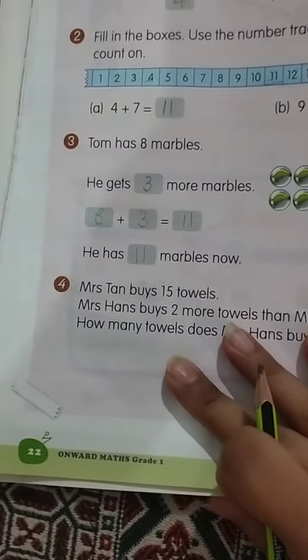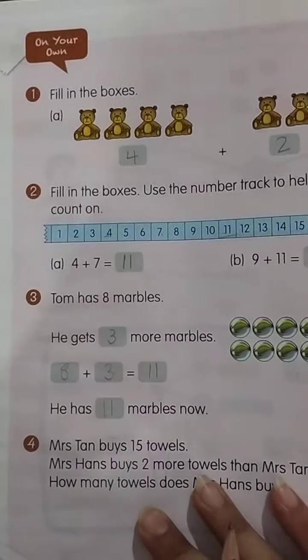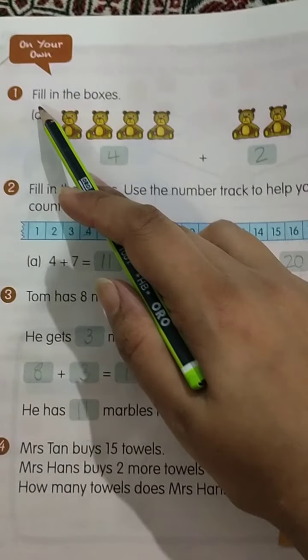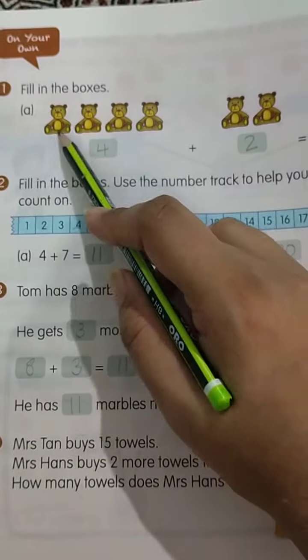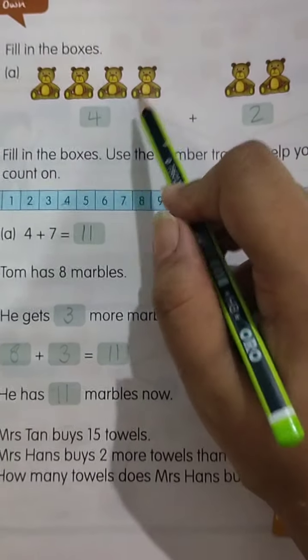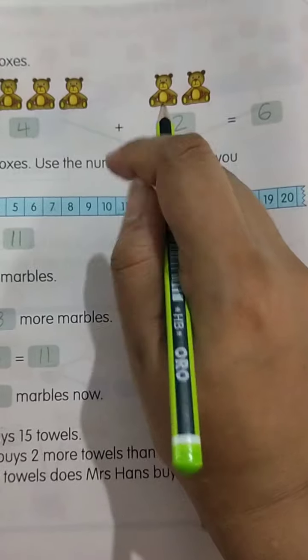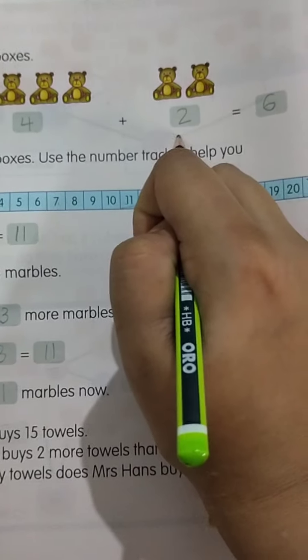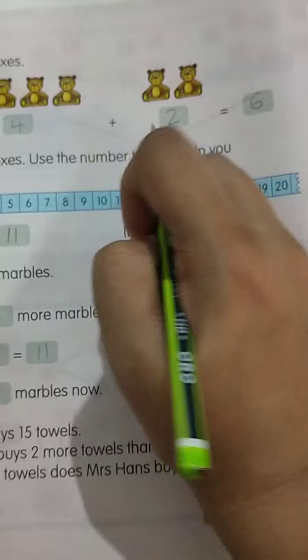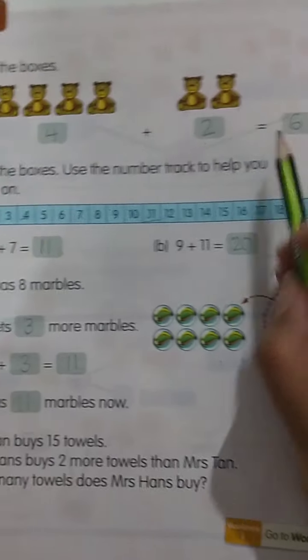Next page. Page number 22. Fill in the boxes. 1, 2, 3, 4, 4 bears. یہاں آپ نے لکھنا ہے 4 plus 1, 2. 4 plus 2 is equal to 6.